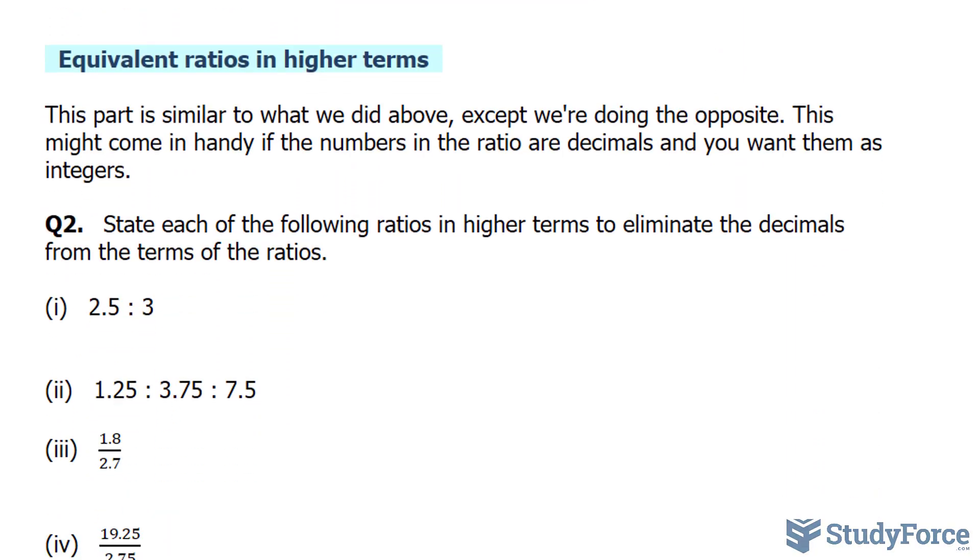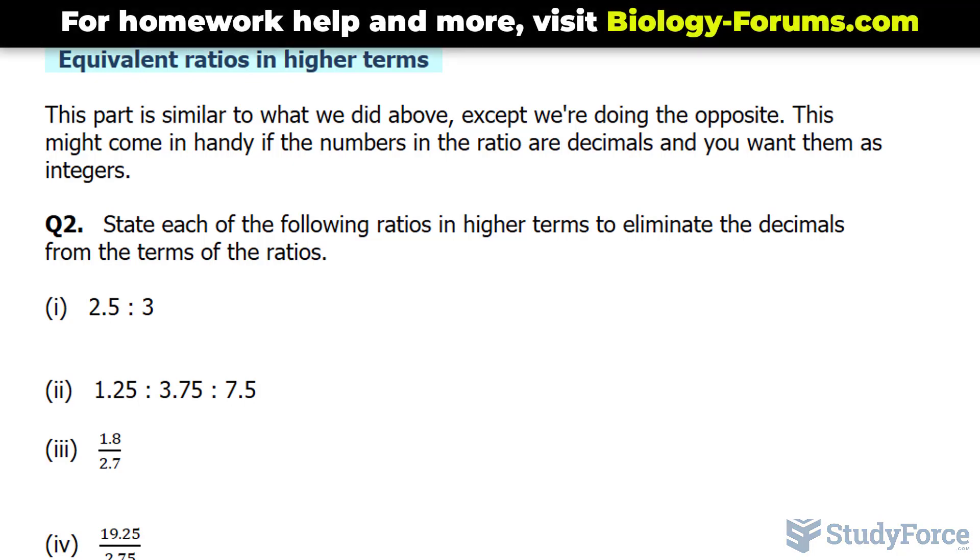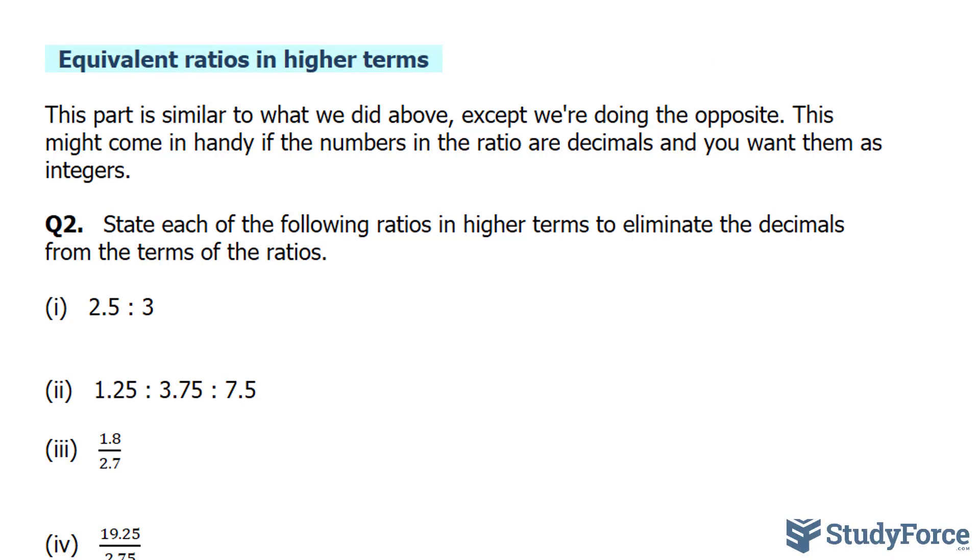Let's continue. This time, I'll show you how to write equivalent ratios in higher terms. So this part is similar to what we just did above, except we're doing the opposite. Rather than reducing it, we're actually making it larger. So question 2 reads, state each of the following ratios in higher terms to eliminate the decimals from the terms of the ratios. So not only do they want it in higher terms, but they also want the decimals to be eliminated.